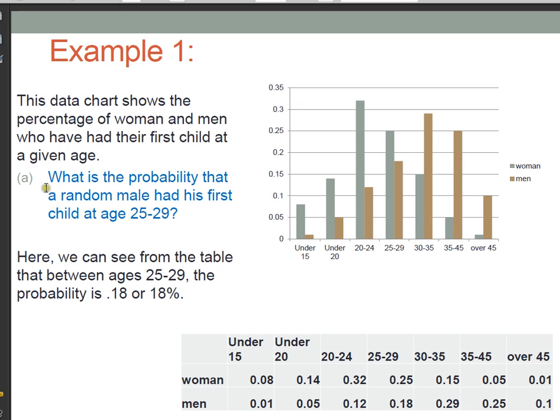Now the question here is, what is the probability that a random male had his first child at age 25 to 29? So what we do to answer this question is we come down here and we find males and we find ages 25 to 29. And that's this value right here, this 0.18. And that tells us that the probability of any random male to have a child in this age range is 0.18 or about 18 percent.